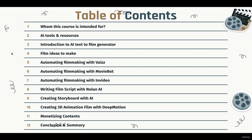Chapter four covers film ideas to make. You might be very excited about this technology but have no idea what film to make. I'll give you several different film ideas to consider, like science fiction adventure, historical reenactment, time travel, alien encounter, educational films, or even mystery films.